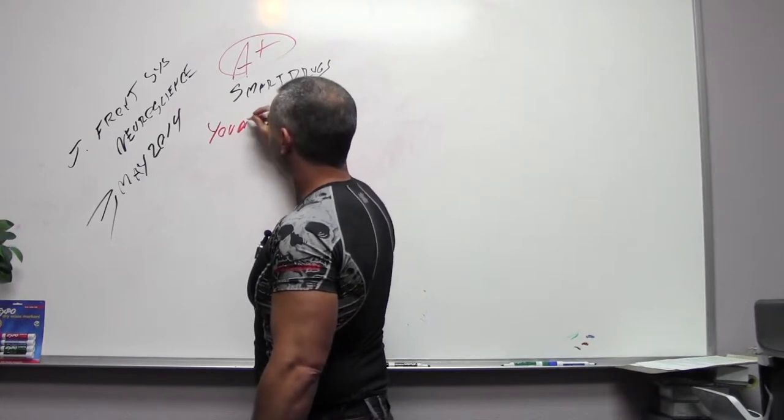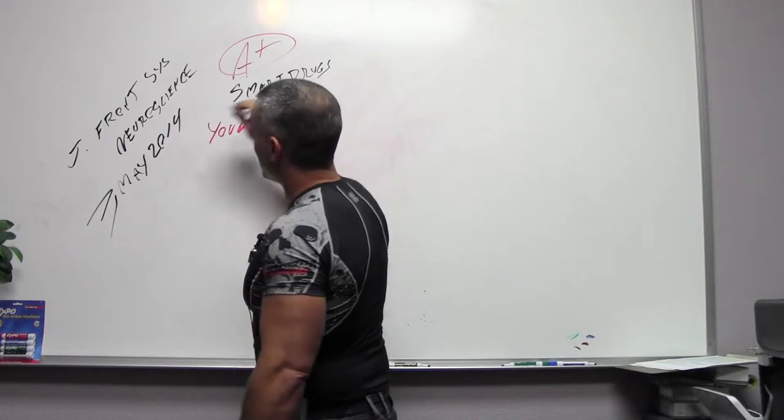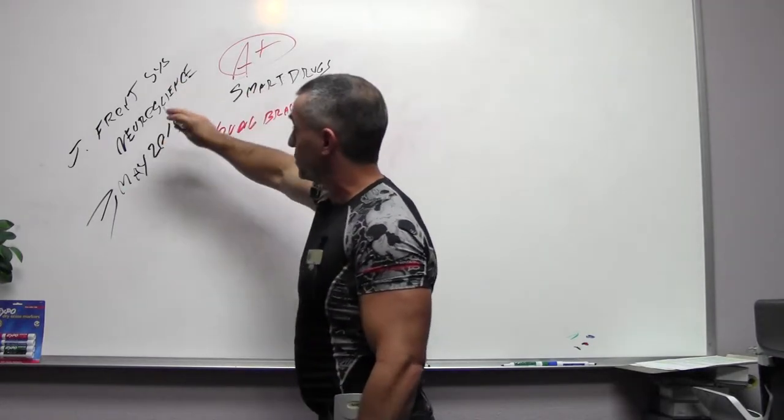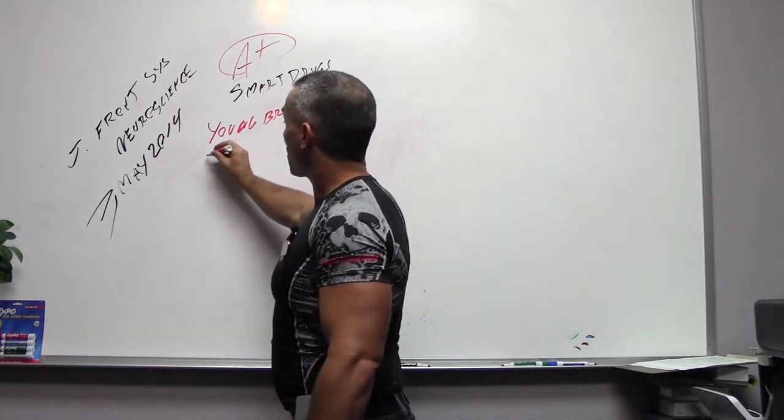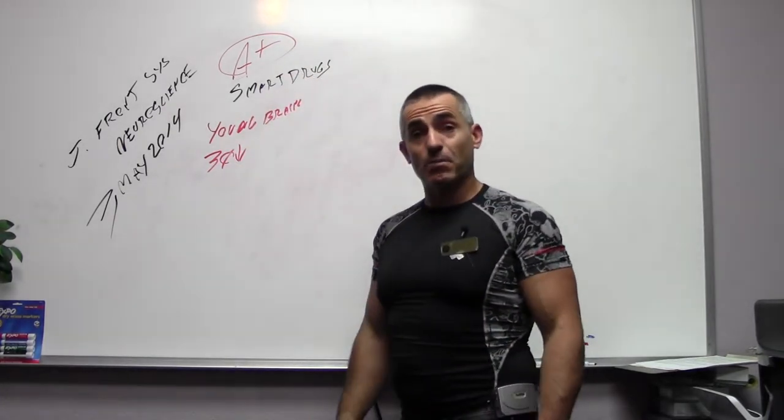Now, young brains—to the researchers at the Journal of Frontier Systems of Neuroscience—is around 30 or below, because they believe the brain is still developing at that point in time.